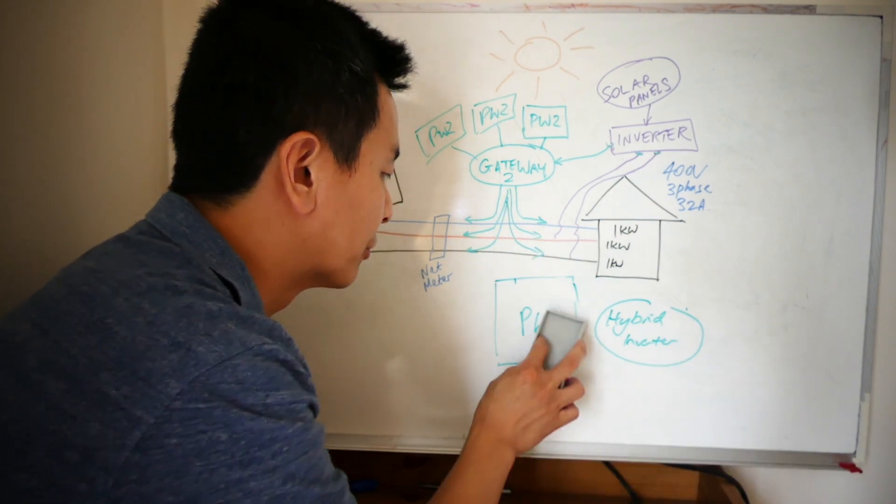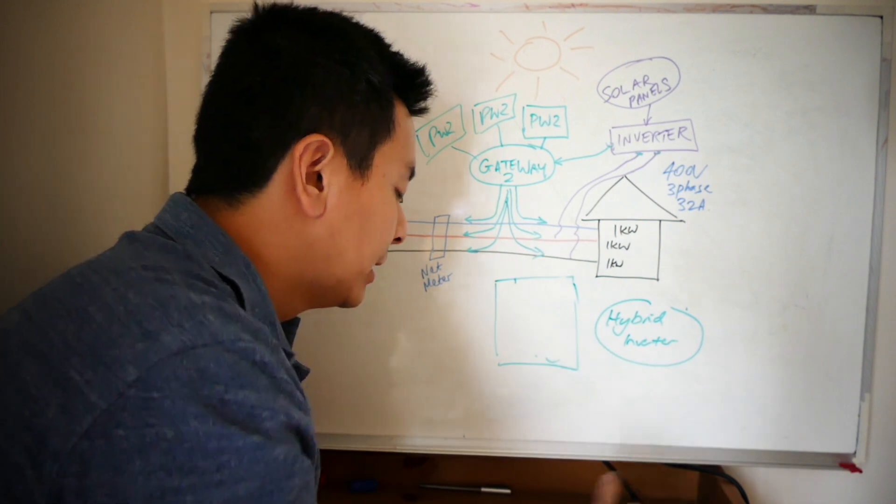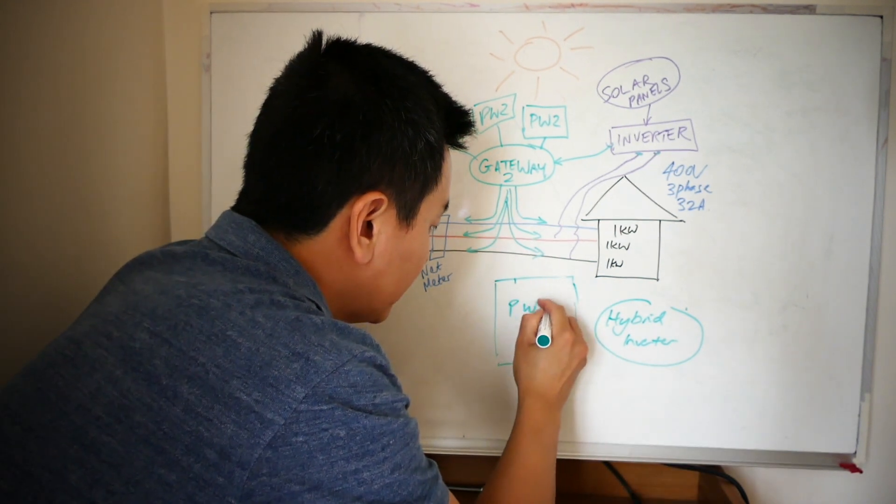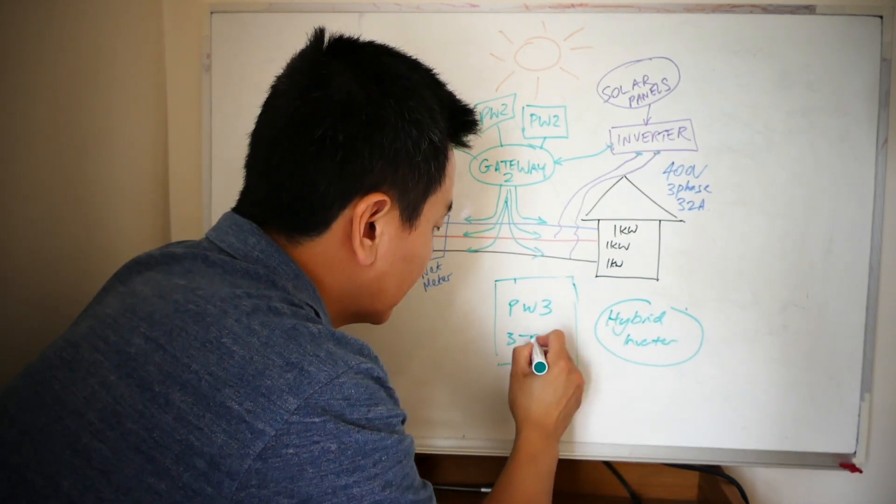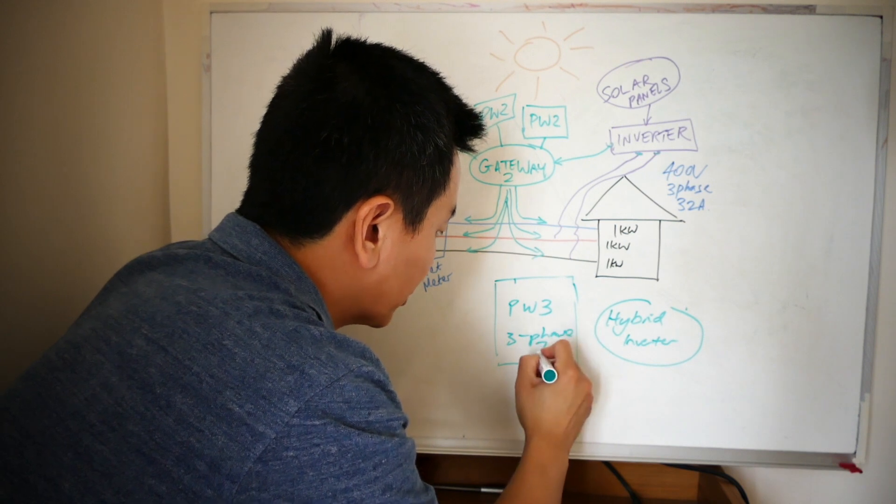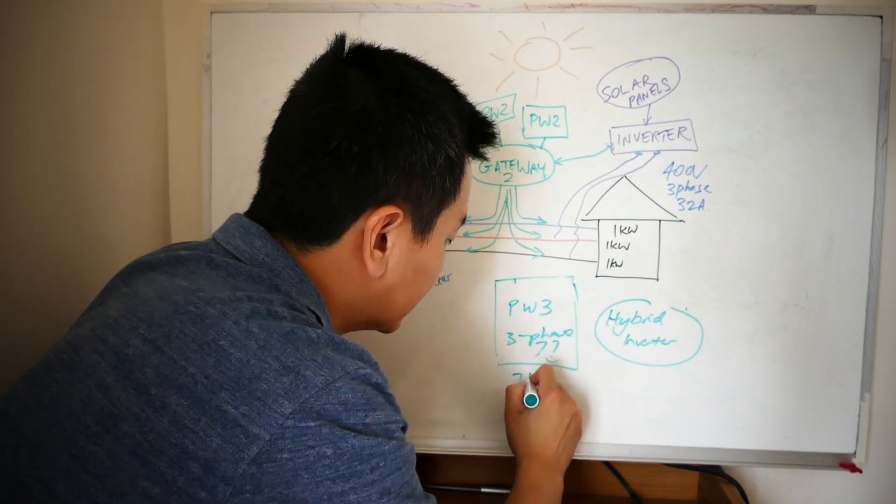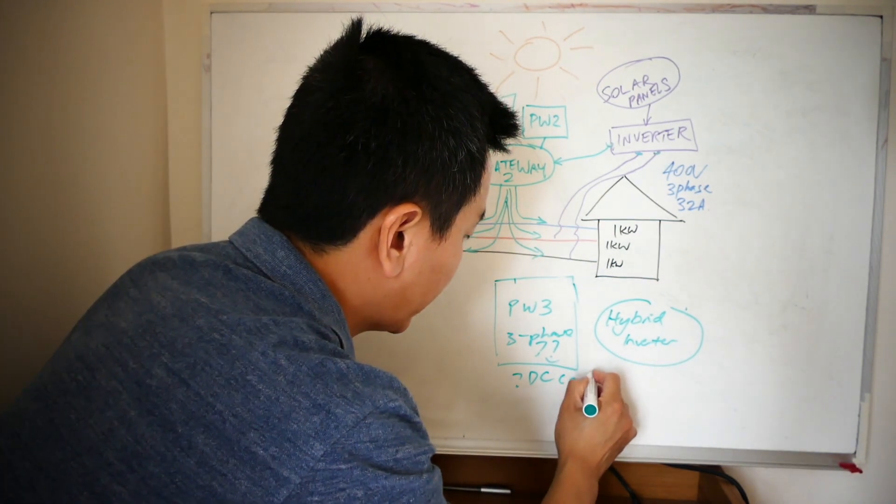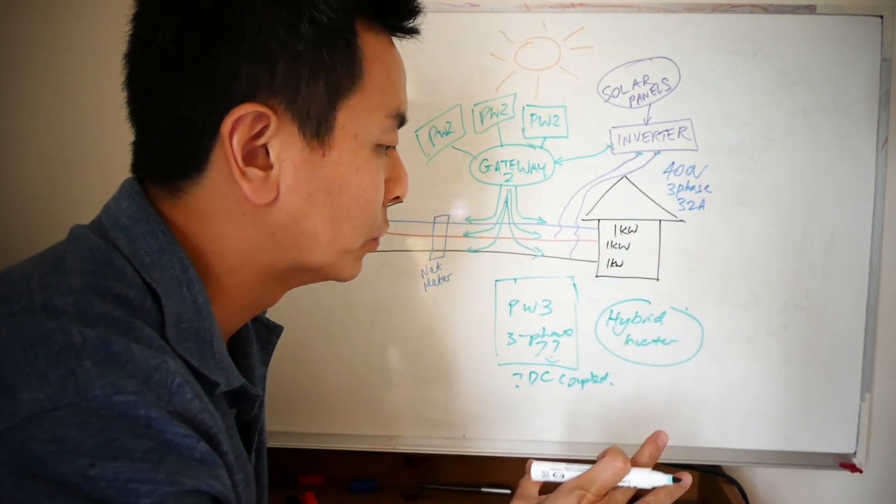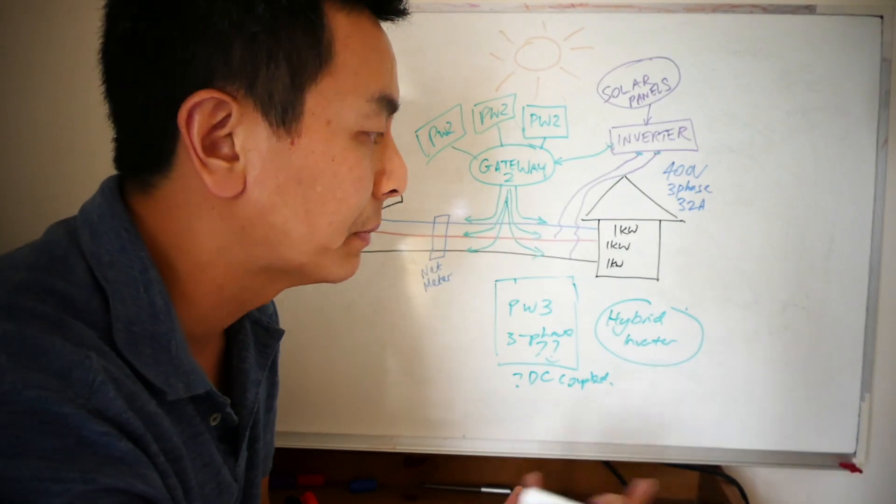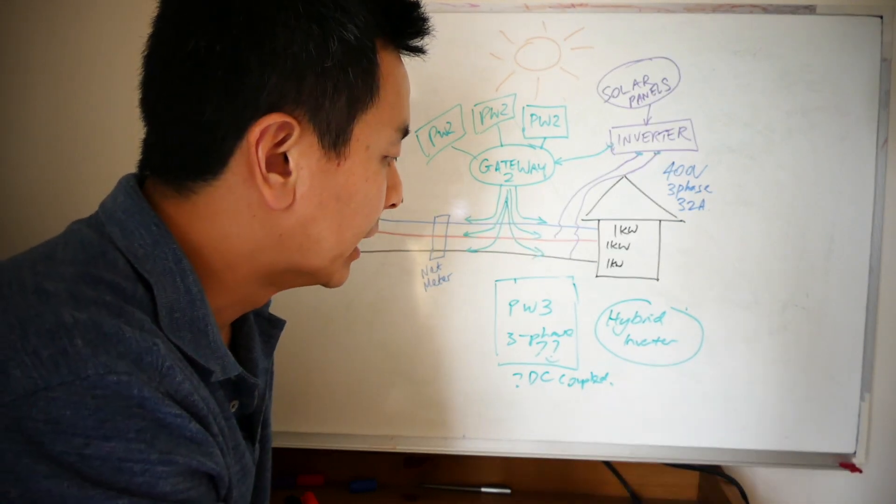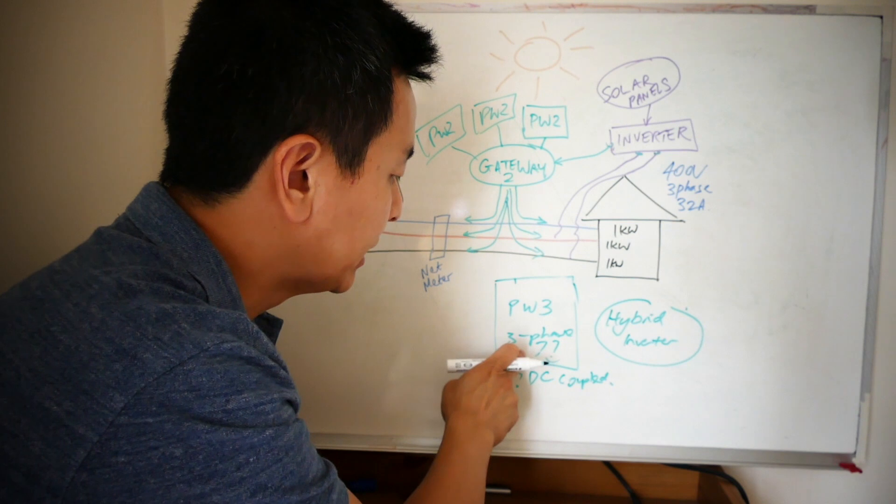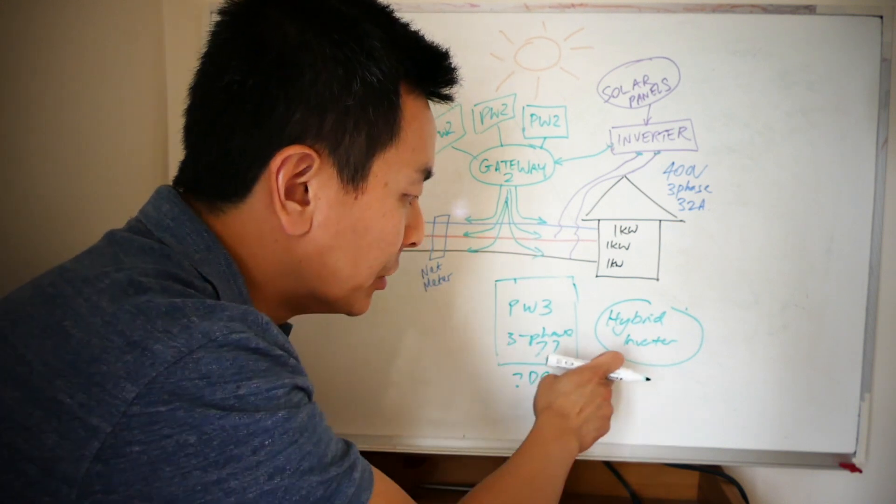So that's your options. Or the other thing is you can wait for a Powerwall 3, which you would hope would be three-phase. I'll put a big question mark there. Or maybe even DC coupled, because that would be nice. Because then, you know, for Australian markets or other countries which are three-phase, like in most of Europe and most of Asia...